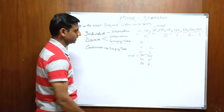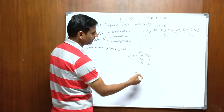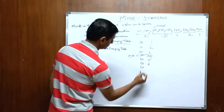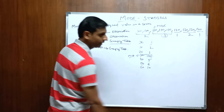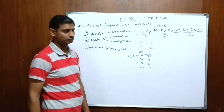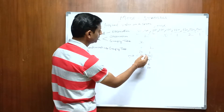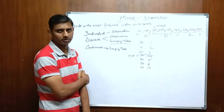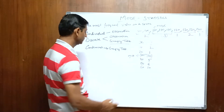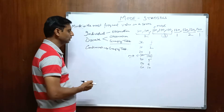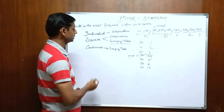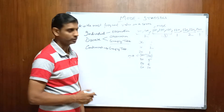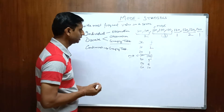Now let's understand — if we add one more value, say 60, which also comes 10 times, then we have a tie in maximum frequency. In this case, to determine the mode, we will use the grouping table. Continuous series we will discuss later. Now let's discuss the grouping table.